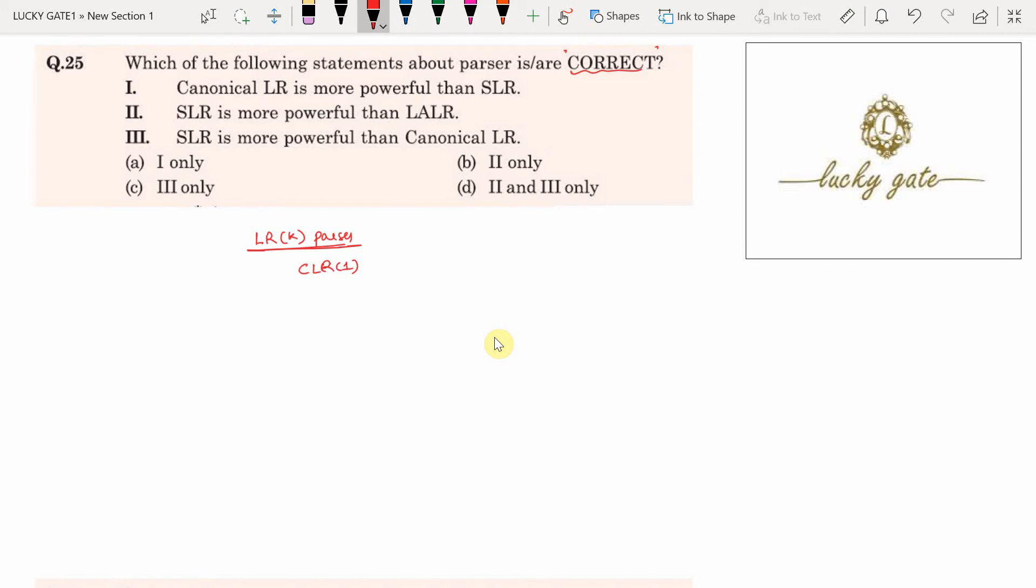The full form of CLR of 1 is canonical LR of 1, which is superset or equals to LALR of 1, which is superset or equals to SLR of 1. This is the relationship among the LR parsers in the LR family.